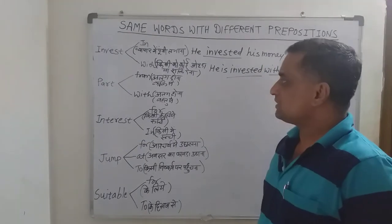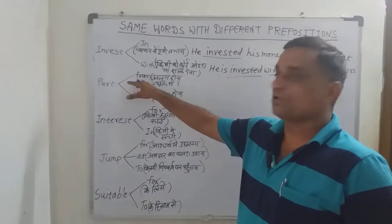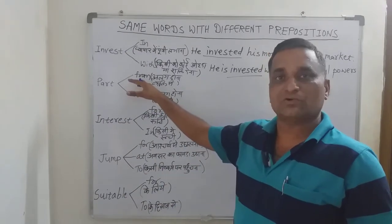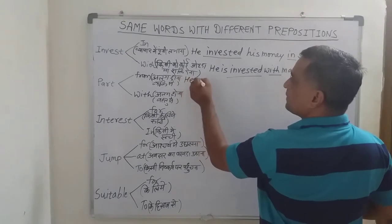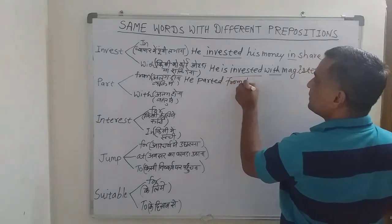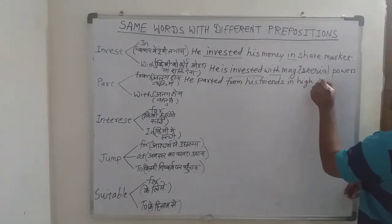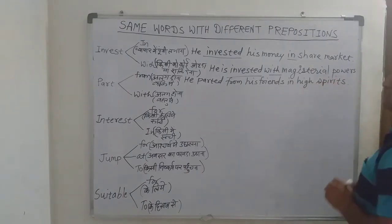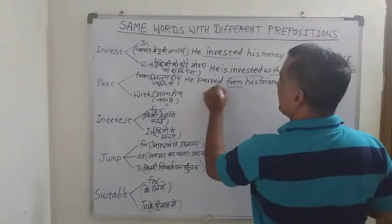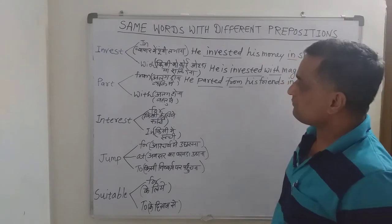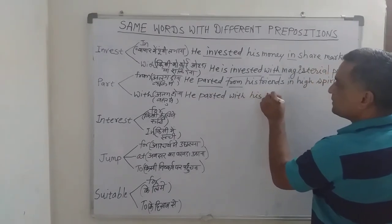Next is 'part from' and 'part with' — another example of same words used with different prepositions. 'Part from' means to separate from a person, while 'part with' means to give up or separate from a thing or possession. For example: 'He parted from his friends in high spirits.' And: 'He parted with his property...'